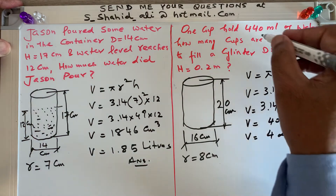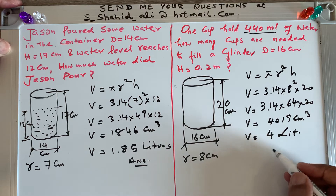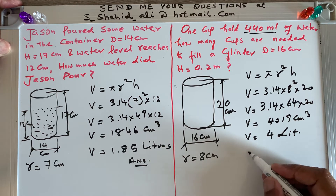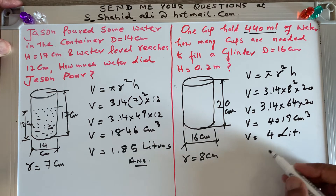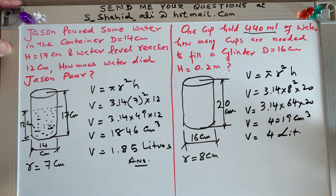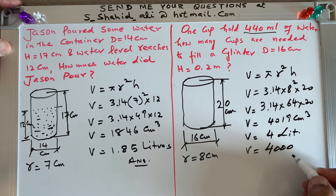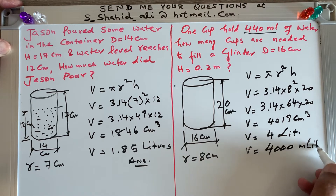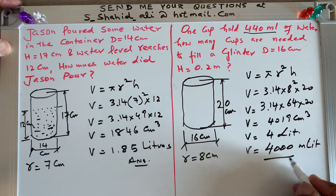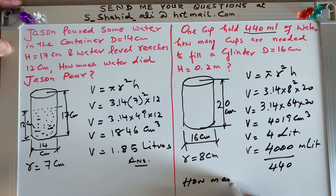One cup holds 440 milliliters, and the cylinder holds 4000 milliliters — since 1 liter is 1000 milliliters, 4 liters equals 4000 milliliters. So we divide 4000 milliliters by 440 milliliters to find how many cups are required.